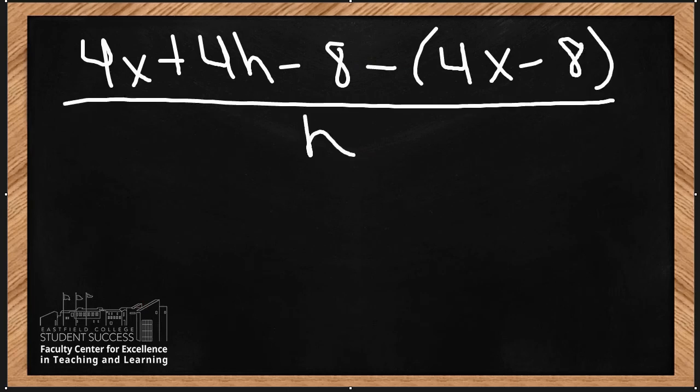Now I'm going to distribute this negative sign in for my parentheses. So this is now negative 4x plus 8, and I'm going to simplify the numerator. My 4x's go to 0. My negative 8 and positive 8 also go to 0.